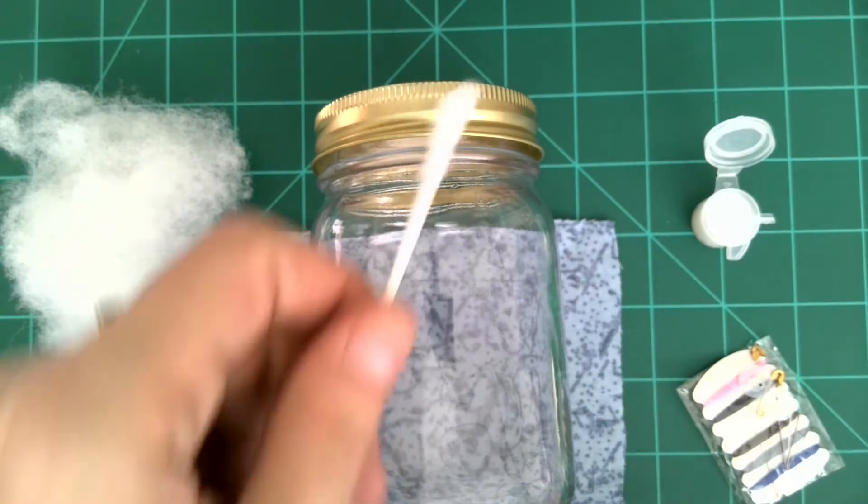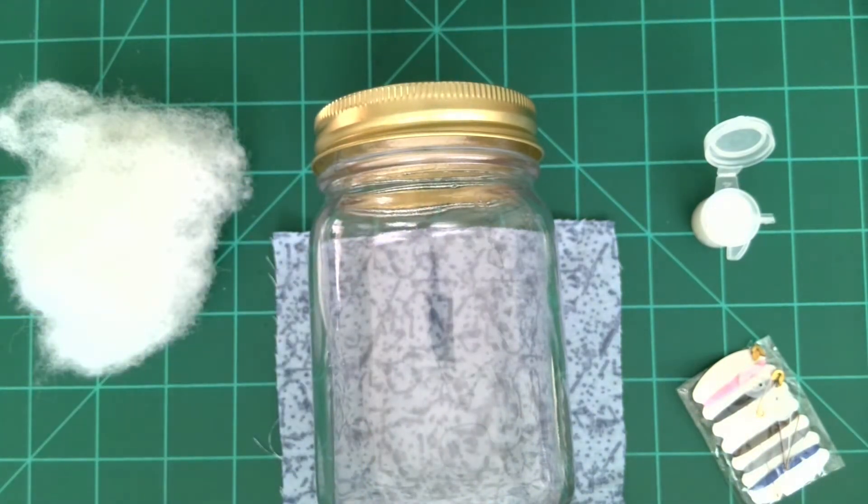You may also want to have something like a Q-tip to spread your glue. I have also included a few things from my original sewing kit at home that I would like to put in my kit. Of course, that's totally optional.